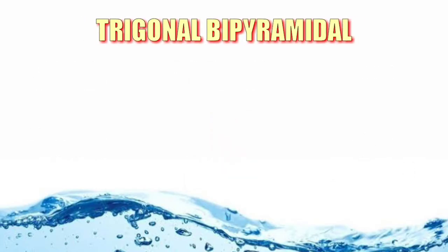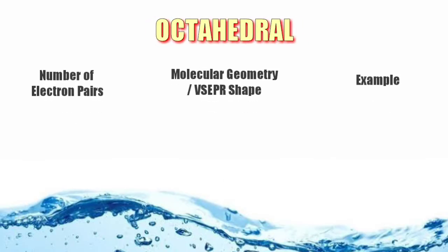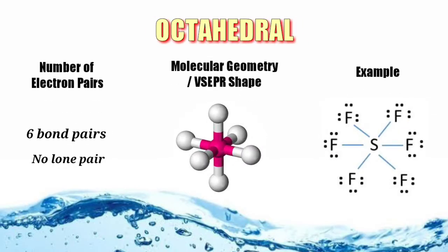Next is trigonal bipyramidal with five bond pairs and no lone pair in the central atom. And last is the octahedral with six bond pairs and no lone pair in the central atom.